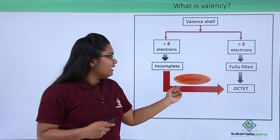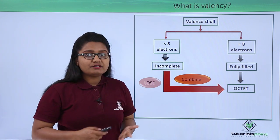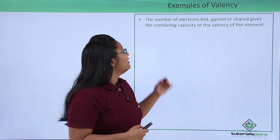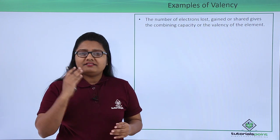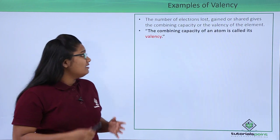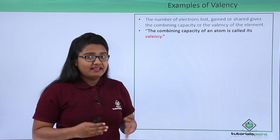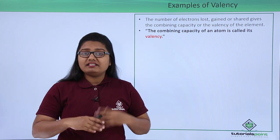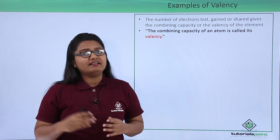There are three ways in which these atoms can combine: they either lose electrons, gain electrons, or share electrons with the other atom. The number of electrons they lose, gain or share directly gives us the value of valency. So we can define valency as the combining capacity of an element — a measure of how readily an element combines with other atoms.